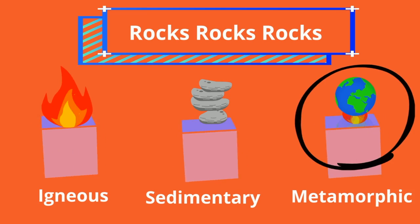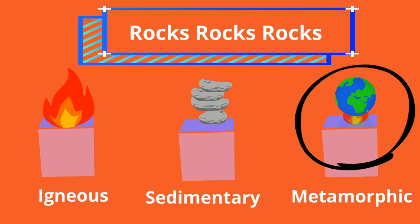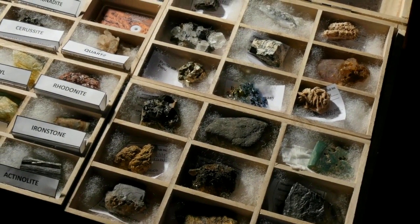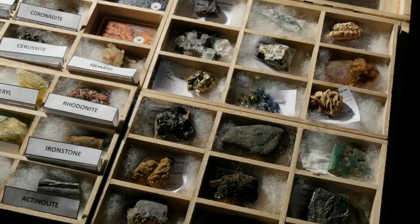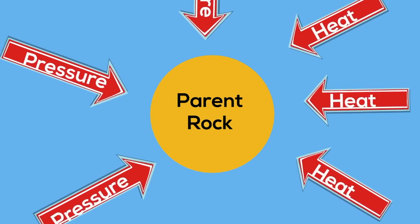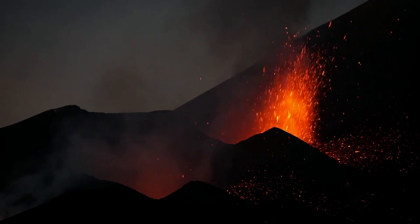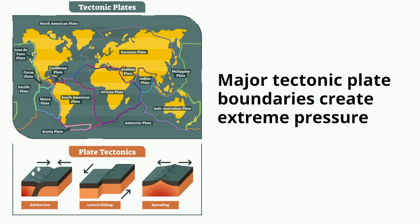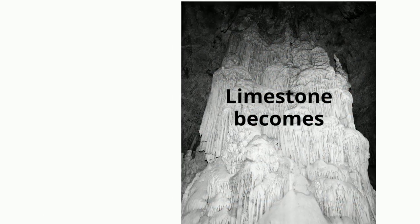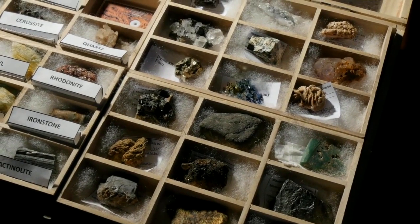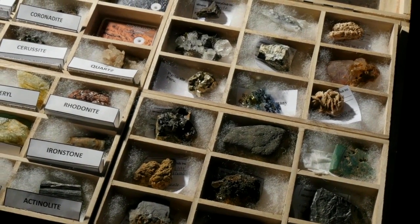Let's take a look at metamorphic rocks. This classic building contains a metamorphic rock called marble. Rocks are classified by how they are formed. Metamorphic rocks come from existing rocks that are subjected to extreme heat and pressure, changing the original rock into a new type of rock. Sedimentary, metamorphic, and even igneous rocks can all become new metamorphic rocks when exposed to heat and pressure.